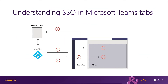Now let's look in a little more detail at how the SSO process works at runtime. In step one, a JavaScript call is made to the getAuthToken method in the tab. This tells Microsoft Teams to obtain an authentication token for the tab application. In step two, if this is the first time the current user has used your application, the user is prompted to consent if consent is required.